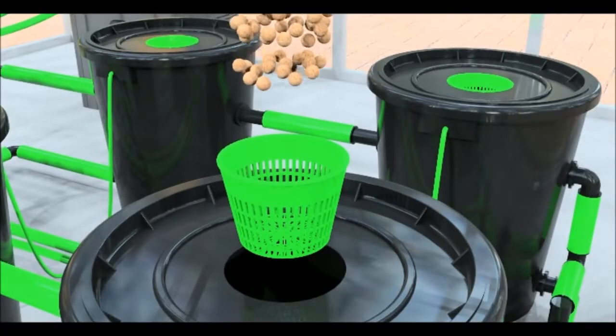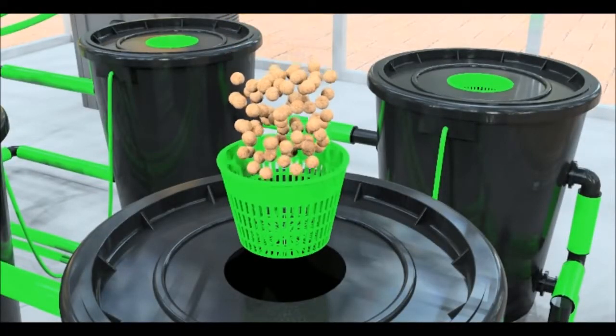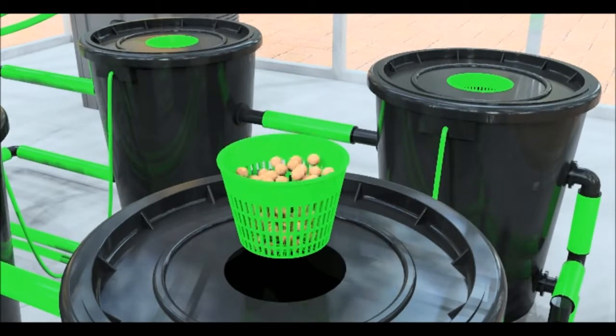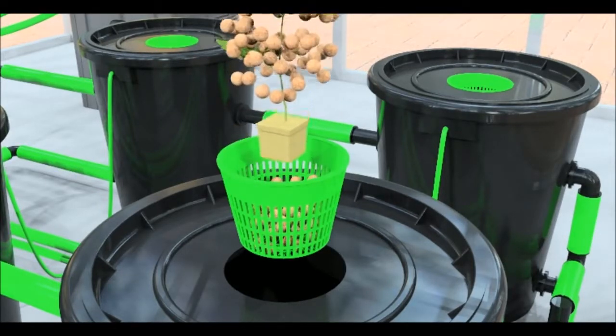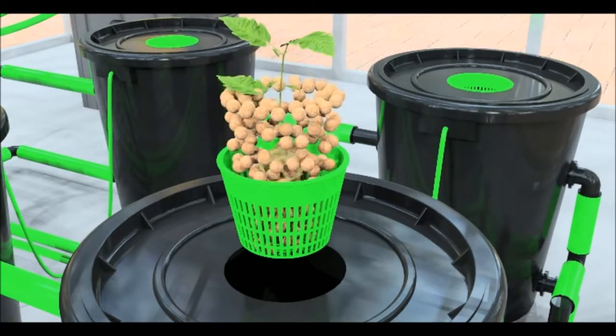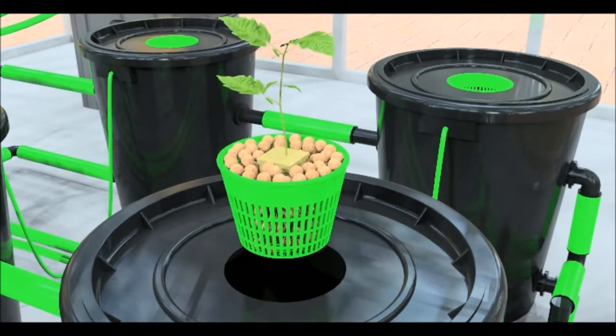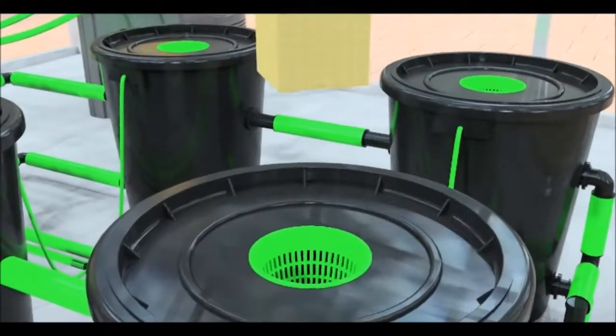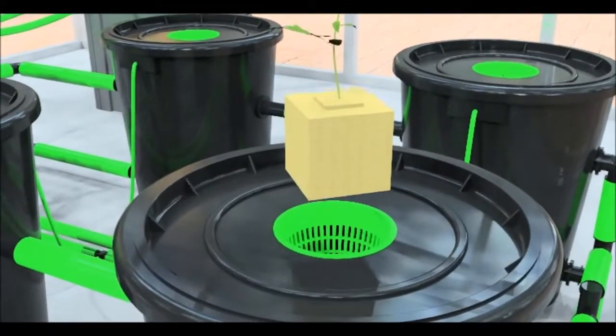Place your plants in the net pot supplied using 1-inch or 3-inch cubes. If using the 1-inch cubes, put a layer of pebbles, approximately 4cm, in the bottom of the net pot. Then place your cube and fill the remaining void with clay pebbles. The 3-inch cubes will fit snugly in the net pot without using any clay pebbles.